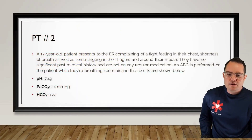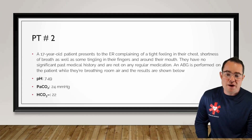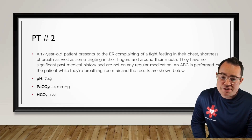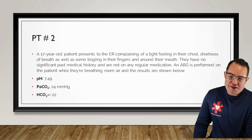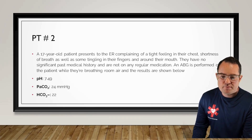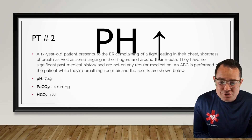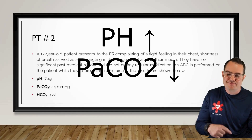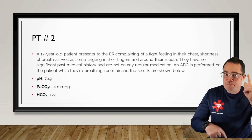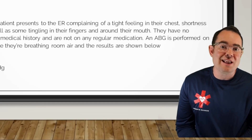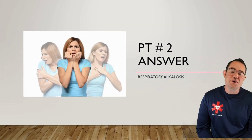A 17-year-old patient presents to the ER complaining of a tight feeling in their chest, shortness of breath, and tingling in their fingers and around their mouth. They have no significant past medical history and are not on any regular medications. ABG is performed while breathing room air. Results: pH of 7.49 — high. PaCO2 of 24 — low. And another normal finding in HCO3. We have a respiratory opposite. 7.49 is alkalotic because it's greater than 7.45. So we're looking at respiratory alkalosis.